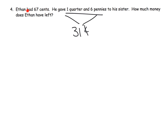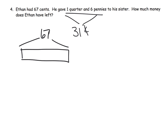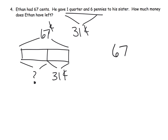It says Ethan had 67 cents and he gave 31 cents to his sister. How much money does he have left? One way we would record that with a tape diagram is: he had 67 cents, he gave 31 cents to his sister, and how much is left? There are probably other ways that you could have drawn your tape diagram — let your students talk about it and as a class discuss the variety of ways you can represent it using a tape diagram.